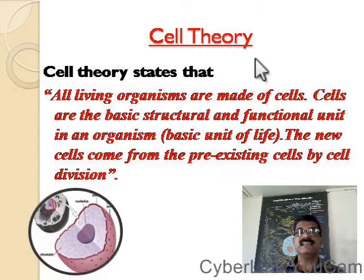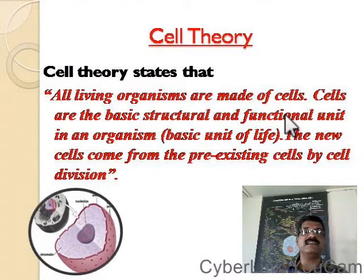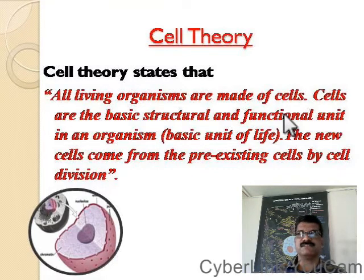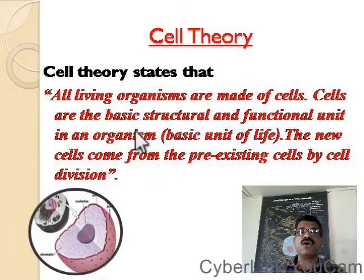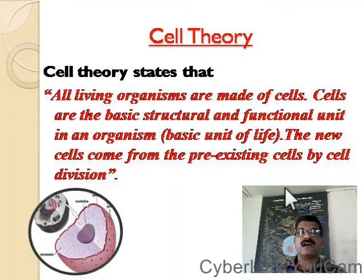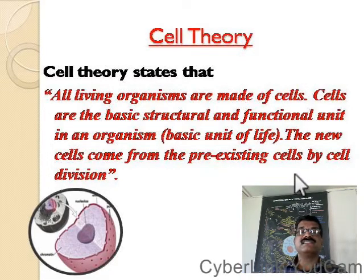By combining all these discoveries, scientists put forward a theory known as cell theory. Cell theory states that all living organisms are made up of the basic units called cells; cells are the structural and functional unit of organisms in both plants and animals; and new cells are developed from pre-existing cells by cell division.